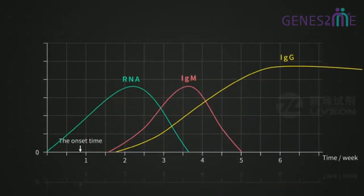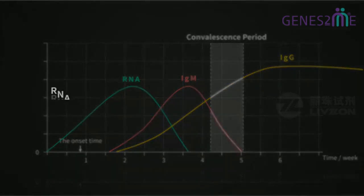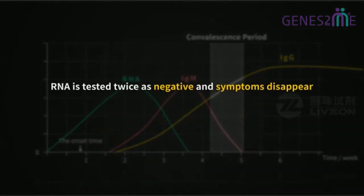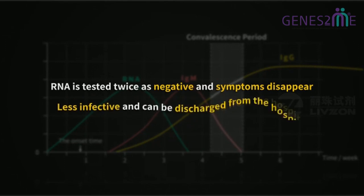When the disease develops to convalescence period, IgM will convert from positive to negative, while IgG will be constantly positive. In such case, if RNA is tested twice as negative and symptoms disappear, the COVID-19 patient is less infective and can be discharged from the hospital.